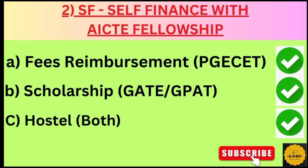The second category is Self-Finance with AICT Fellowship. Here also students are divided into the same two sub-categories: TSPGSET students, and GPAC or GATE students. The same three benefits apply — fees reimbursement for TSPGSET students, scholarship for GATE or GPAC students, and hostel facilities if available at that college — both for regular and self-finance students.